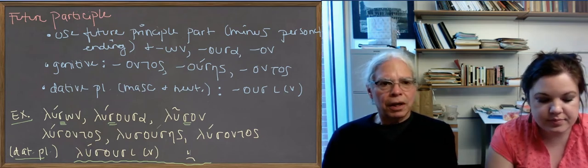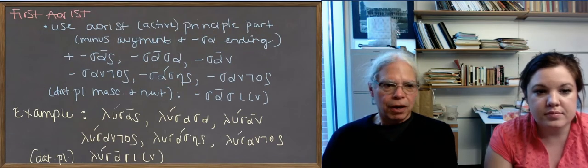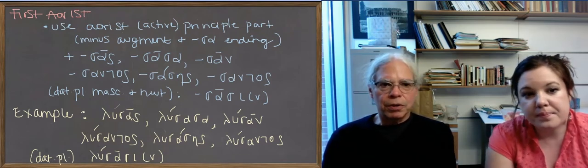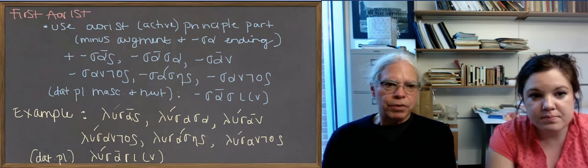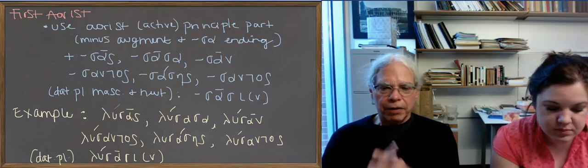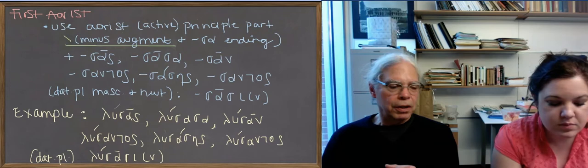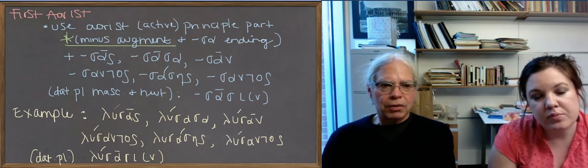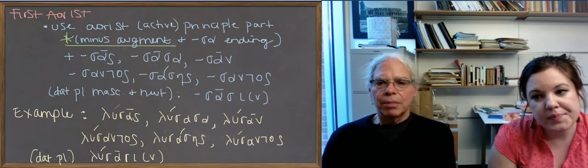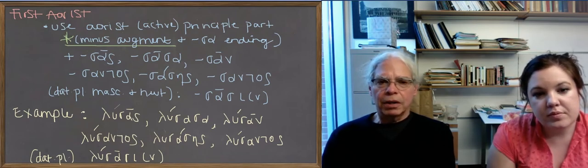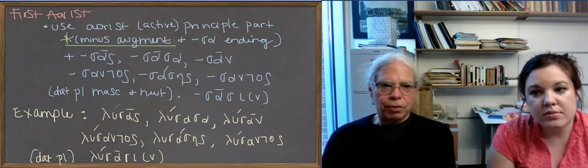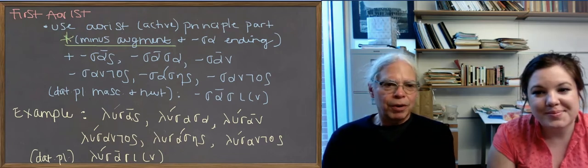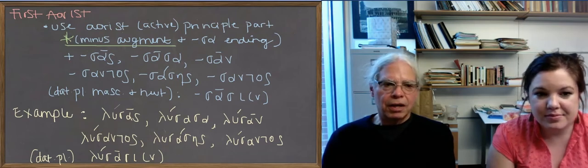So now let's move to the aorist participles. Remember, now we have two kinds of aorists. We have first aorists and second aorists. So here's how you make the first aorists, the things that we started with. You start with the aorist principal part. For example, for λύω, it's ἔλυσα. And you remove the augment, because participles have aspect and not tense, we have to remove tense markers. So there's no augment in the aorist form of participles. So that gives you λυσα. And we're saying also to remove the -σα ending, because I think the best way to think of it is that the participle ending includes the sigma, that's the sign of the aorist. So if you remove the -σα from ἔλυσα and the augment, you get λυ. In effect, you're back at the first principal part.